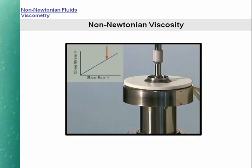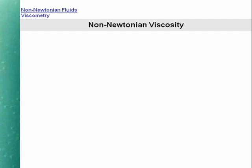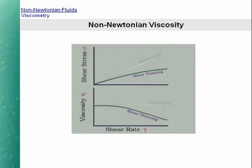Such linearity is not found in most non-Newtonian systems. Usually, the viscosity of such systems is a decreasing function of shear rate. In layman's terms, this means that non-Newtonian liquids get thinner the faster you stir them. We call this shear-thinning behavior.